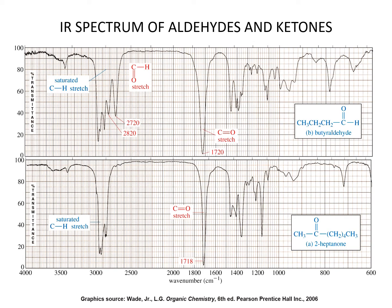Here we show butyraldehyde and 2-heptanone. Both show saturated C-H stretches around 3000. There is a stretch corresponding to the carbon-hydrogen from the carbonyl of butyraldehyde, whereas 2-heptanone does not provide it. Both have the carbon double bond oxygen stretch at around 1700.